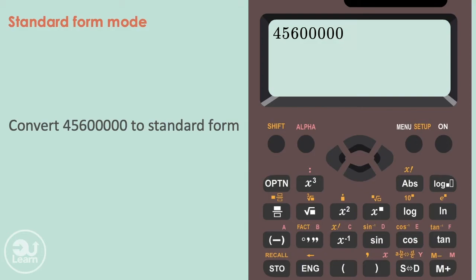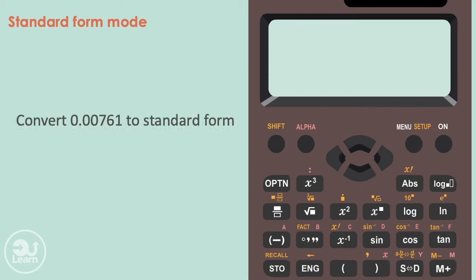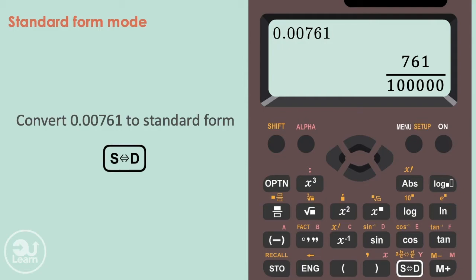We type our number into our calculator and press equals. The calculator automatically gives our number in standard form, that's all we have to do. Let's try a smaller number. Typing this number and pressing equals gives our answer as a fraction. We then press the SD button to show it in standard form.